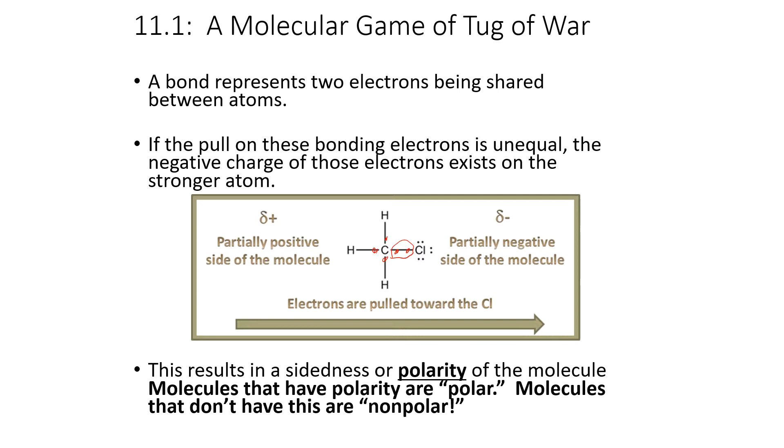So the two shared electrons here of carbon and chlorine are represented by that line, which is a bond. And those electrons aren't always shared equally. Sometimes one atom wants to pull those electrons and have custody of those electrons more than the other. And because of the increased custody of a negative electron, it gains a partial negative charge. That delta is a symbol that we use.